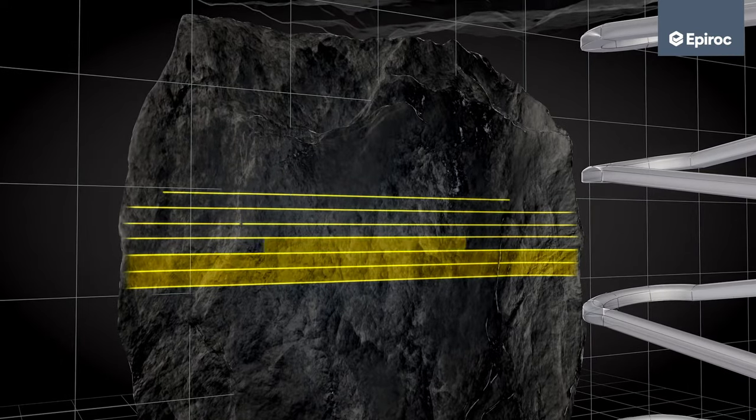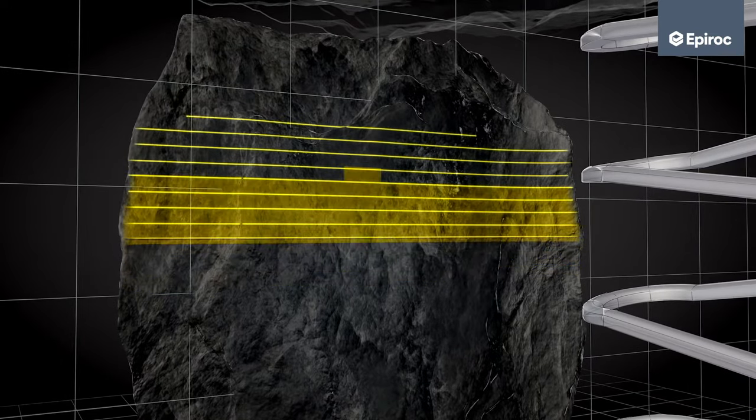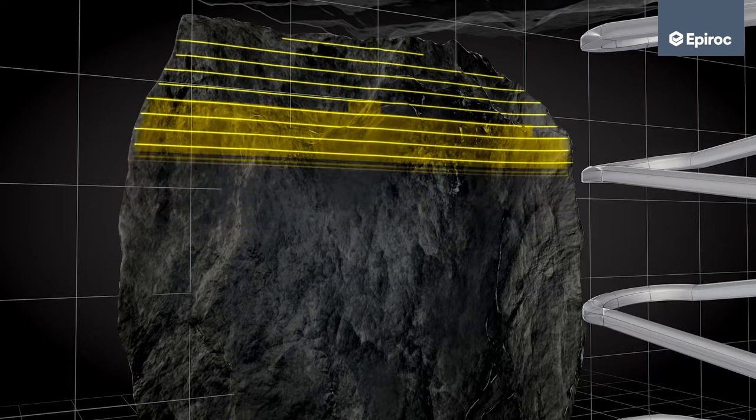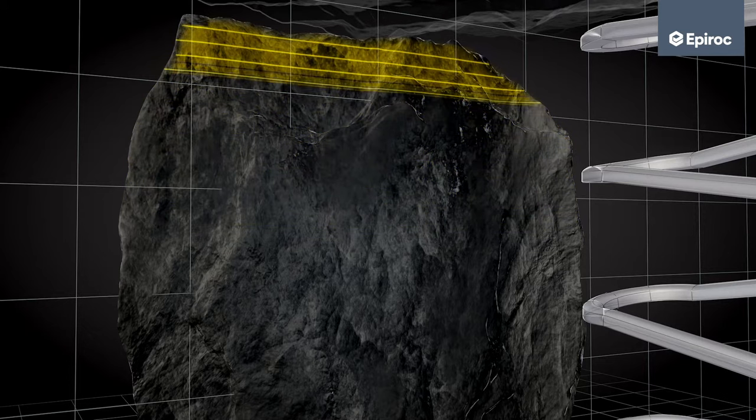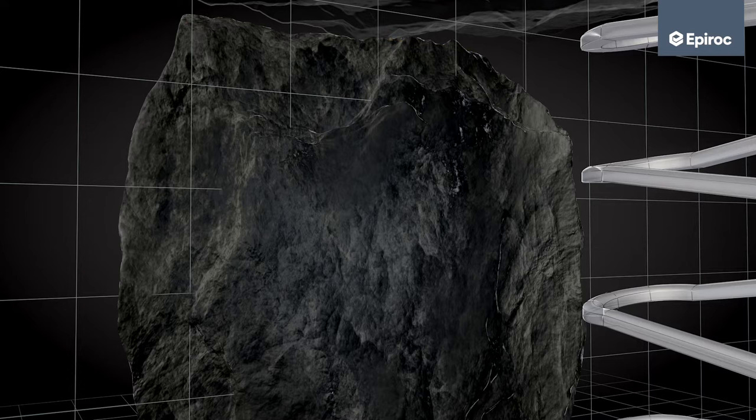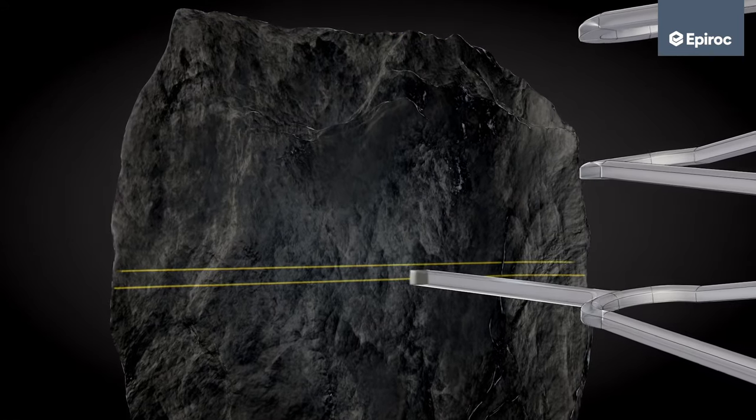Mining is carried out in horizontal slices along the ore body, where the bottom slice is mined first. The excavated area is then backfilled and production continues upwards.